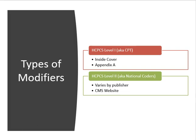Number one, we have our CPT modifiers, which, as you know, is level one of the HCPCS code set. Those modifiers can be found in the inside cover of your CPT manual and in Appendix A. But in the inside cover and Appendix A, you will also notice modifiers that look slightly different — instead of being numerical, they are letters, such as RT and LT. Those modifiers are actually from the HCPCS Level 2 code set, also known as National Codes, the actual HCPCS manual.